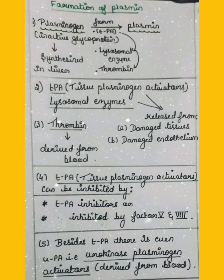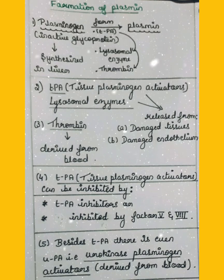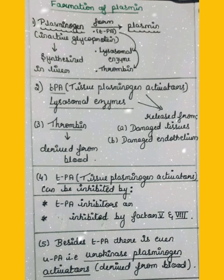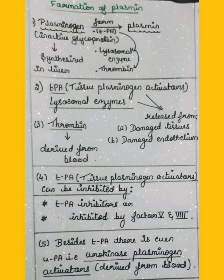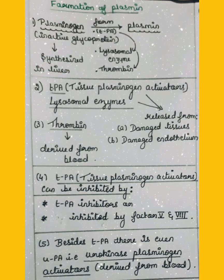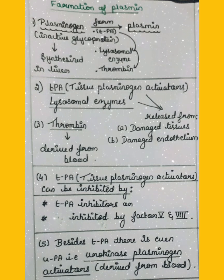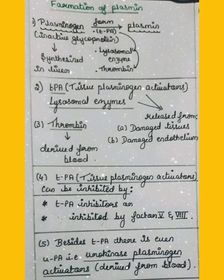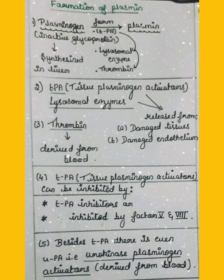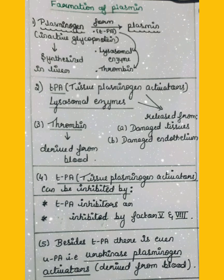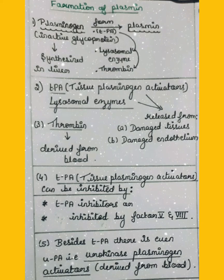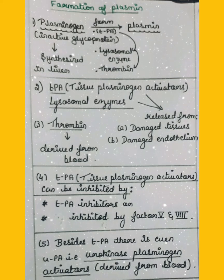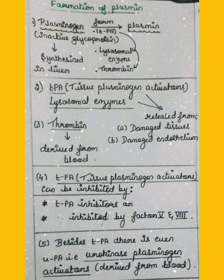This plasminogen is mainly synthesized inside the liver. Thrombin is derived from the blood. The TPA and lysosomal enzymes required to convert plasminogen into plasmin are released from the damaged tissues or damaged endothelium.